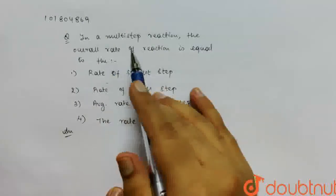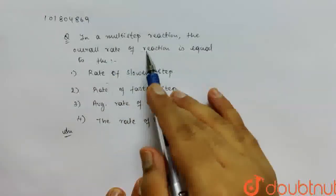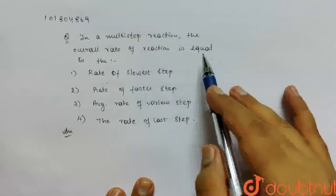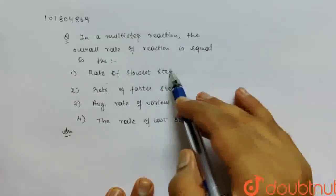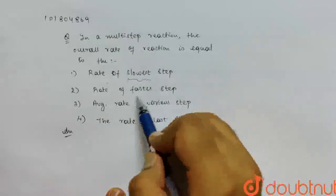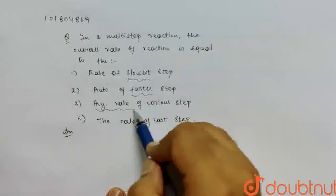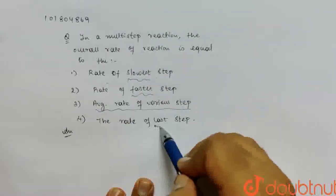Basically, your rate law expression, which factors it depends on. So, the rate here can be either slowest step or fastest step, or average rate of all steps, or last step.